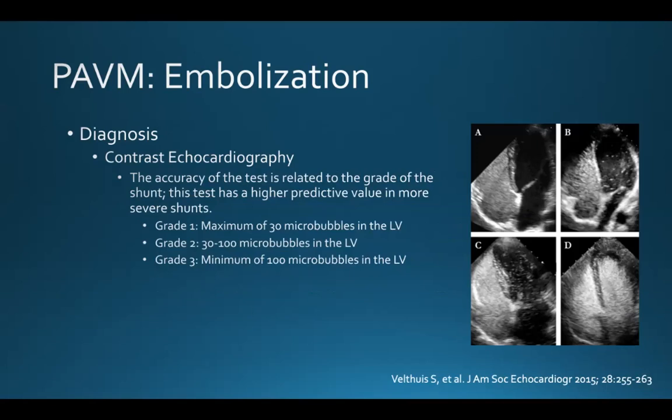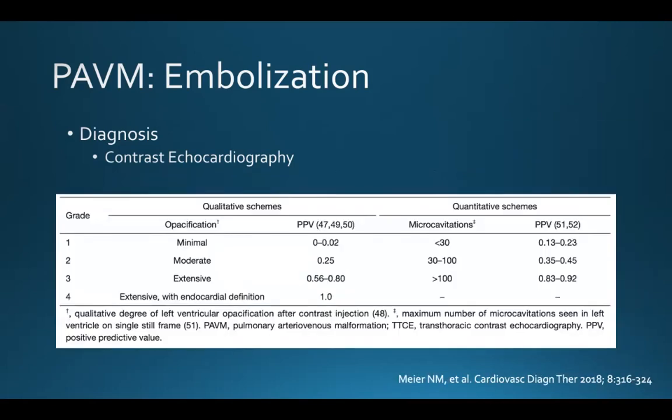In a grade one shunt, there's a maximum of 30 micro-bubbles in the left ventricle. In grade two, there are 30 to 100 micro-bubbles in the LV. In grade three, there's a minimum of 100 micro-bubbles in the left ventricle. There is a grade four shunt, which is extensive with endocardial definition. The positive predictive value increases with grade of the shunt.